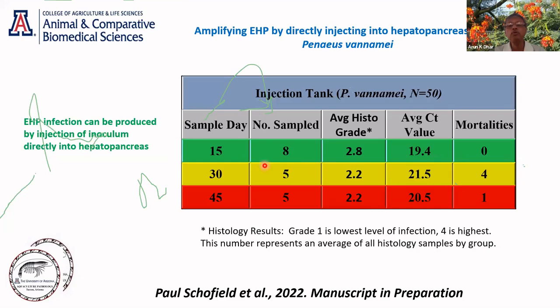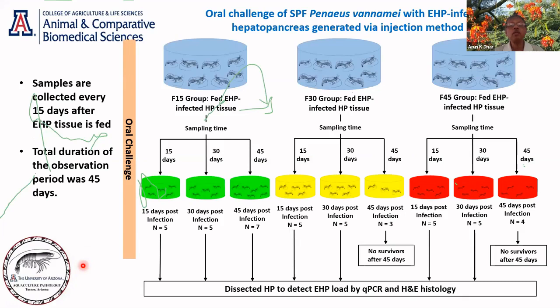Remember, you can take one EHP-infected animal, dissect the hepatopancreas, and produce enough inoculum to inject 40 to 50 animals. So you can have a really large number of infected animals and hepatopancreas tissue within 15 days. Then we sacrificed those animals at 15, 30, or 45 days, dissected the HP, and fed it to healthy animals. Each group was again sacrificed at 15, 30, and 45 days. Basically, what we wanted was to generate large quantities of inoculum very quickly and then see how good that inoculum is for screening healthy animals.